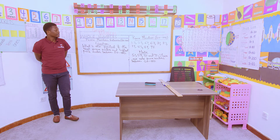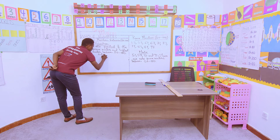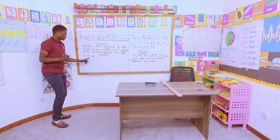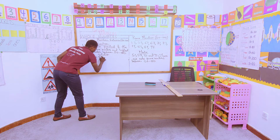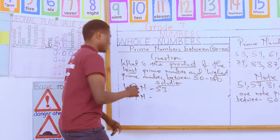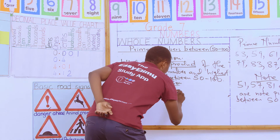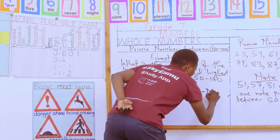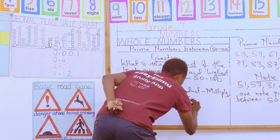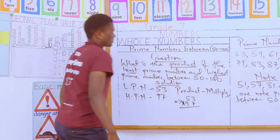So according to our prime numbers, what is the least prime number? Mary says 53 — correct! The least prime number between 50 to 100 is 53, and the highest prime number between that interval is 97. We know that product means multiplication, so this is 53 times 97.